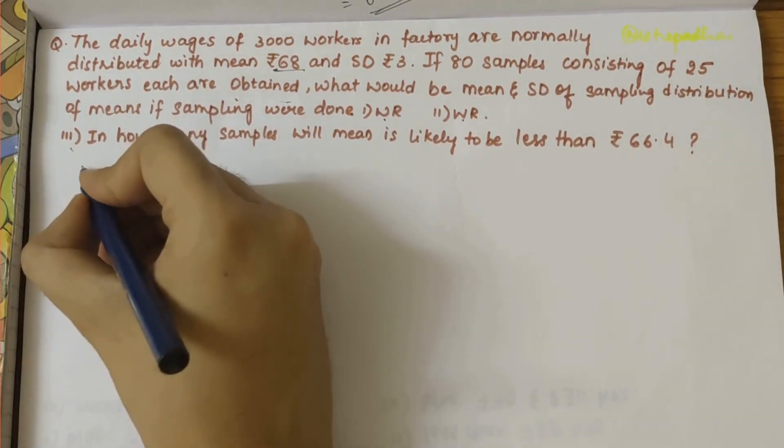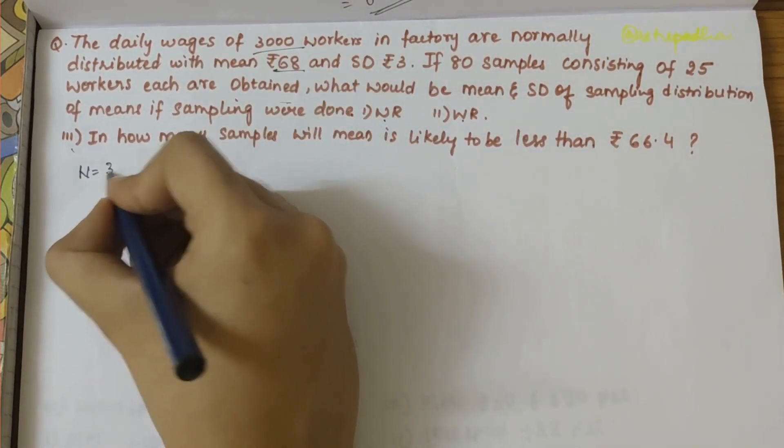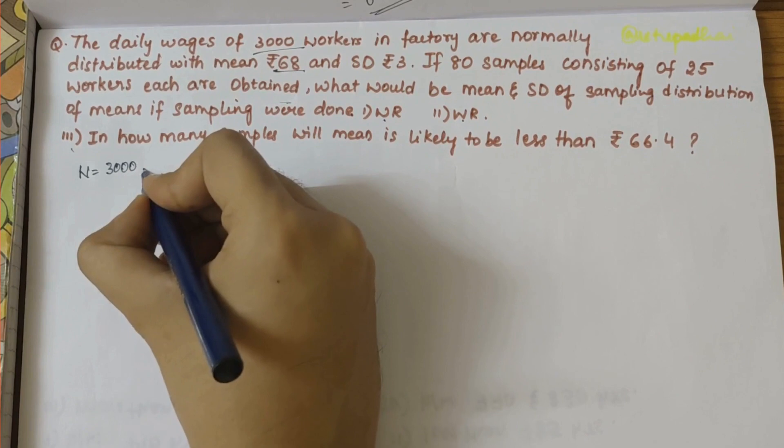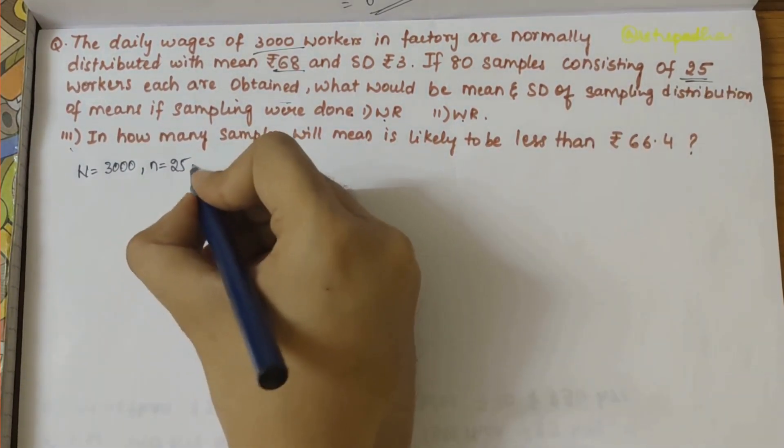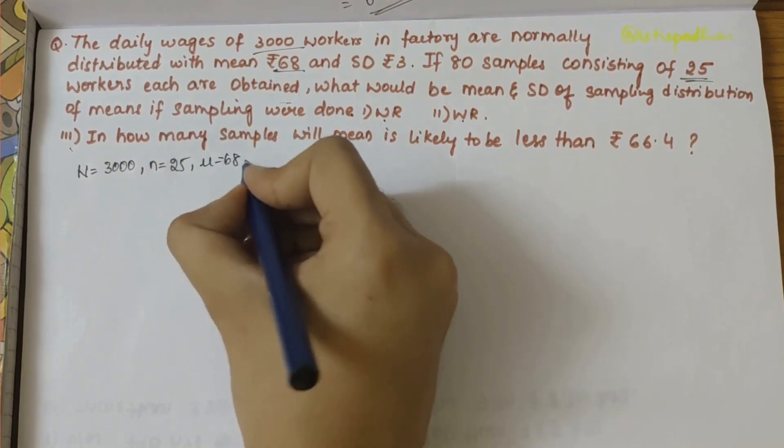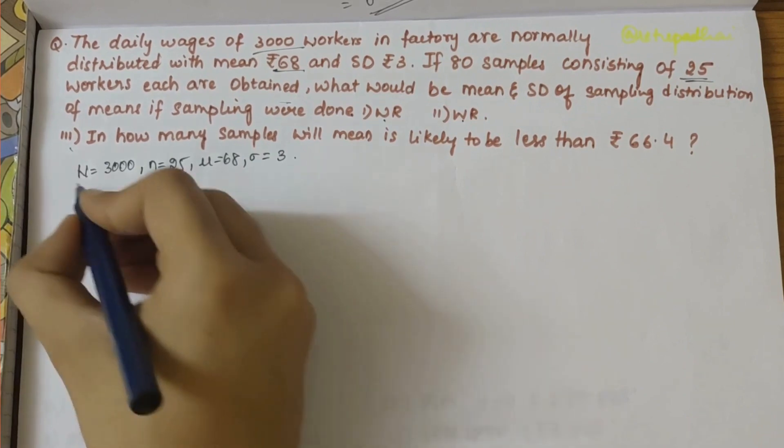So first, capital N value is 3000, then we have small n, the sample size, which is 25, then we have mean μ = 68, and standard deviation σ = 3.